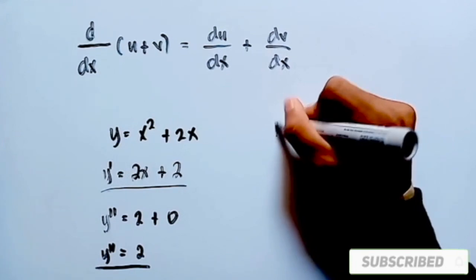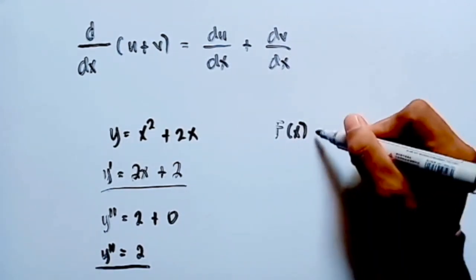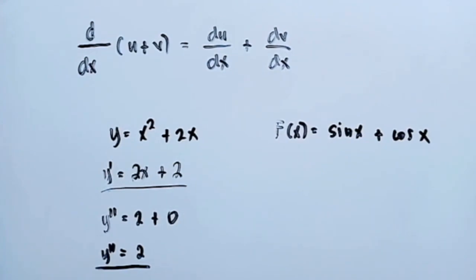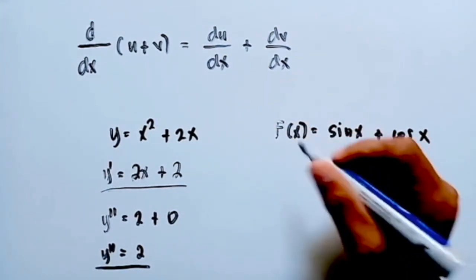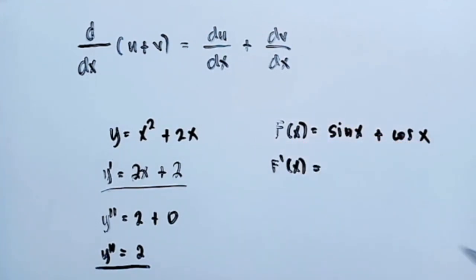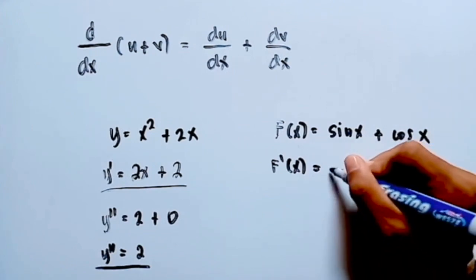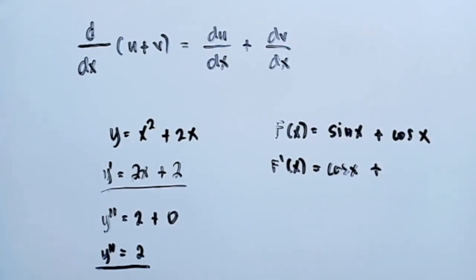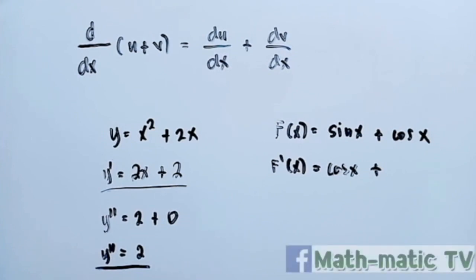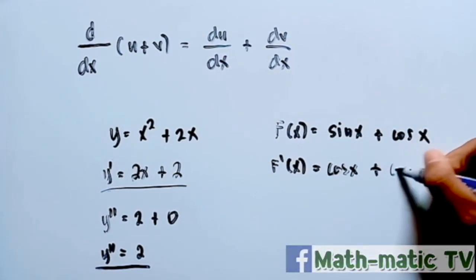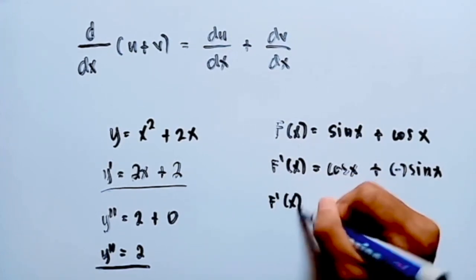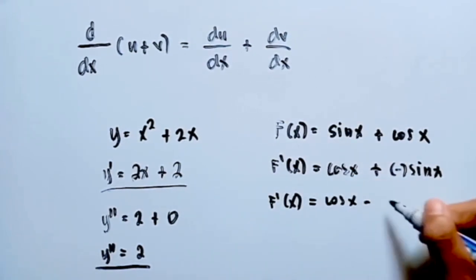So let's differentiate the function f(x) equal to sine x plus cosine x. Following this formula, the first derivative f prime of x is equal to — what is the derivative of sine x with respect to x? The derivative of sine x is cosine x. Plus, what is the derivative of cosine x with respect to x? The derivative of cosine x is negative sine x. Hence, f prime of x is equal to cosine x minus sine x.